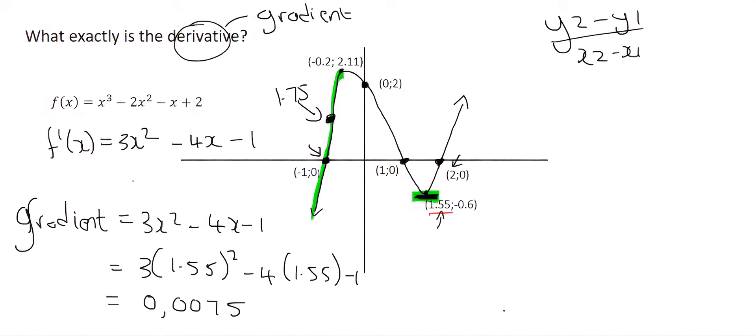This 1.55 is probably like 1.543 or 1.557 or something like that. But the idea is that the gradient is pretty much 0 at that point.